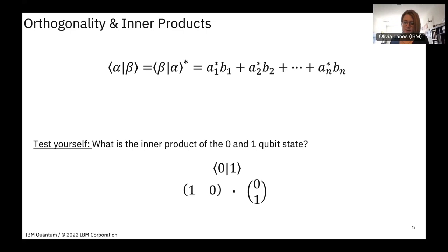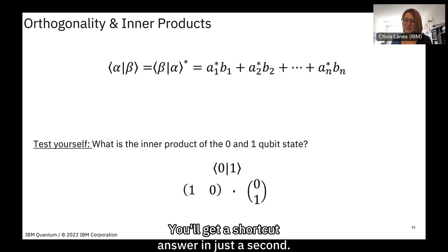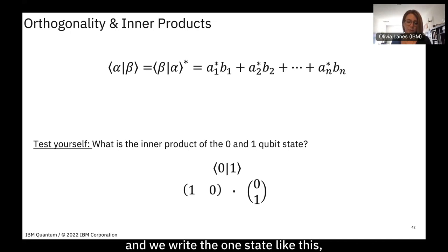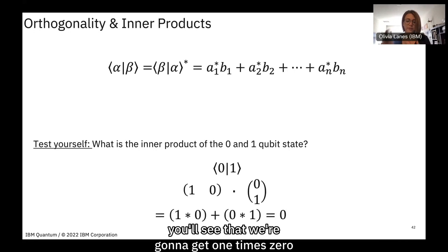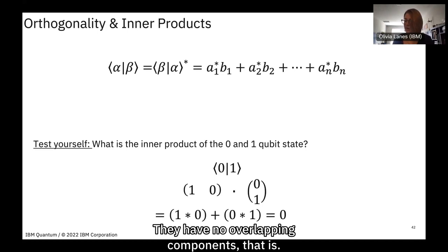When we write the inner product of |0⟩ and |1⟩, we flip the dimensionality of |0⟩ so it becomes a bra. Multiplying through gives one times zero plus zero times one, which is zero. This should not be surprising because |0⟩ and |1⟩ are orthogonal states — they have no overlapping components in the vector space.